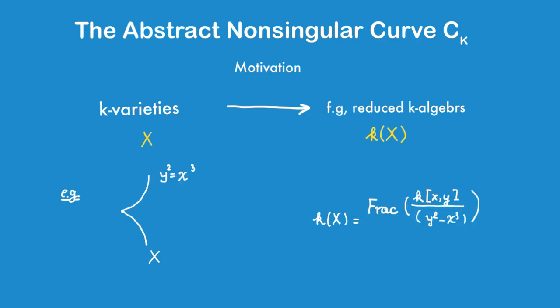It gives us a way to study X algebraically. A natural question would be, can we go the other way around? That is, could we recover the variety X from its function field?